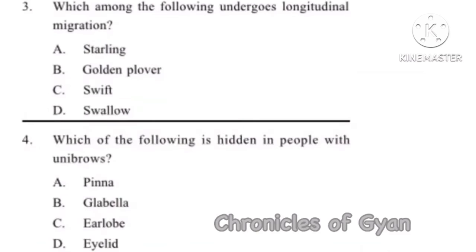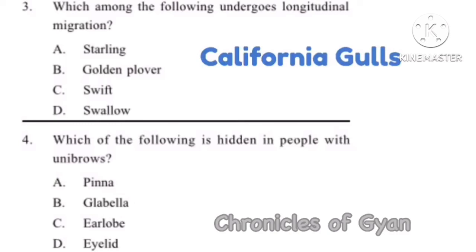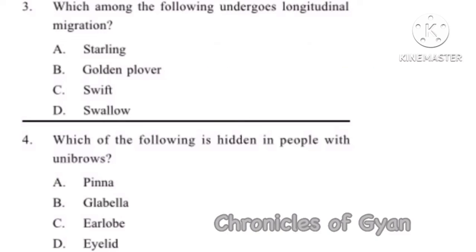Question 3: Which among the following undergoes longitudinal migration? Longitudinal migration means when birds migrate from east to west and vice versa. The best example of this is starlings, and they migrate towards the Atlantic coast. So the correct option is A, starling.